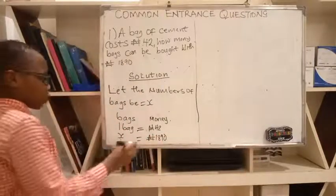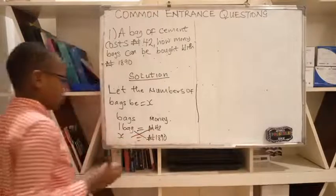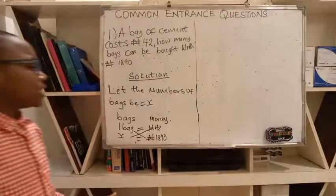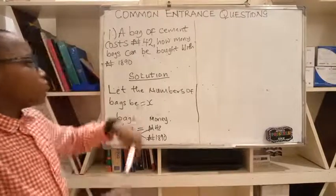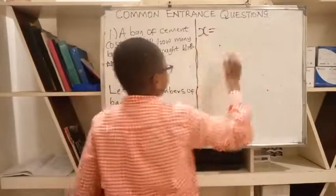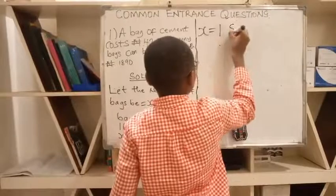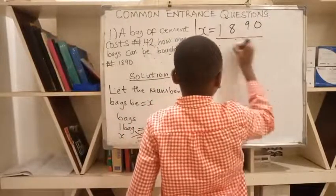Let us cross multiply. This goes to here and this goes to here. X now has a coefficient. From simple equation, X equals 1890 divided by 42.